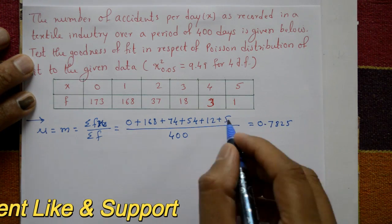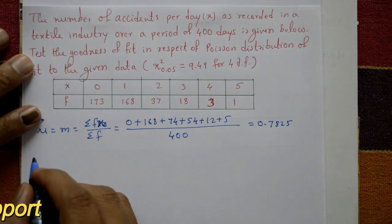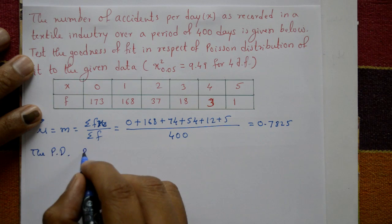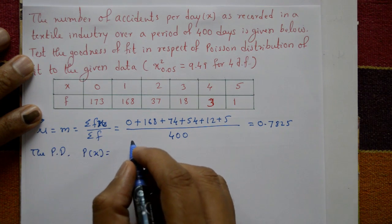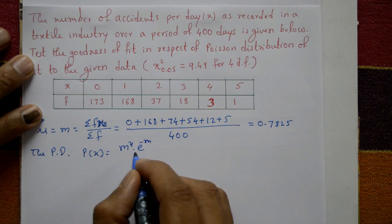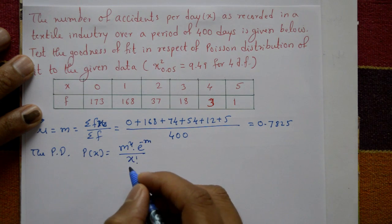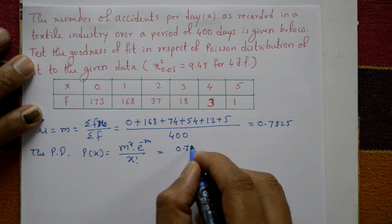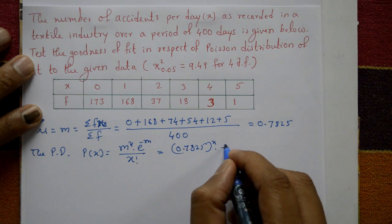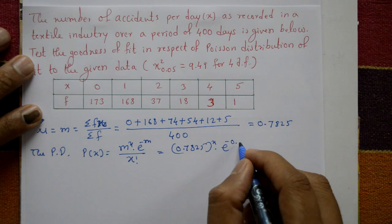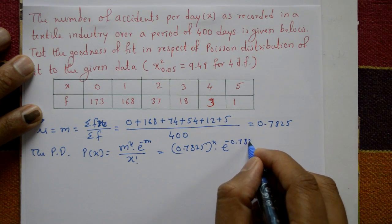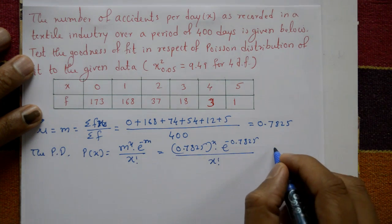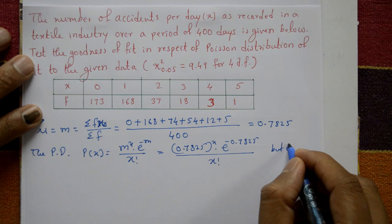This gives mean m equal to 0.7825. Now we have the Poisson distribution formula: P(x) = m^x · e^(−m) / x!. Substituting m = 0.7825, we get P(x) = (0.7825)^x · e^(−0.7825) / x!. The value of e^(−0.7825) is approximately 0.4573.